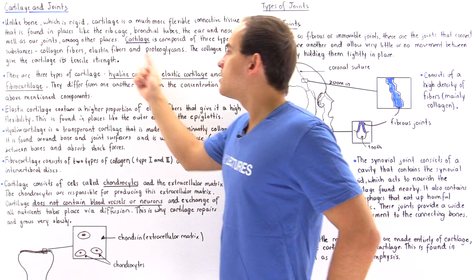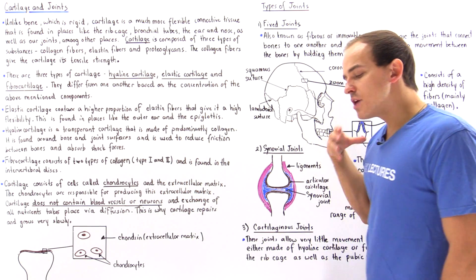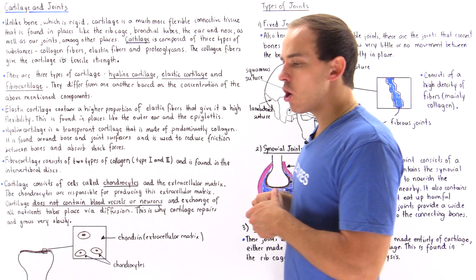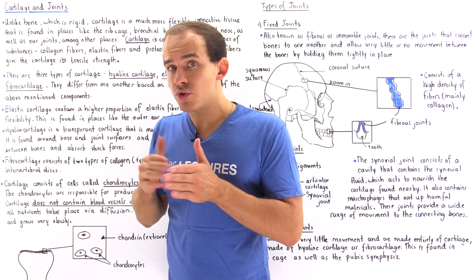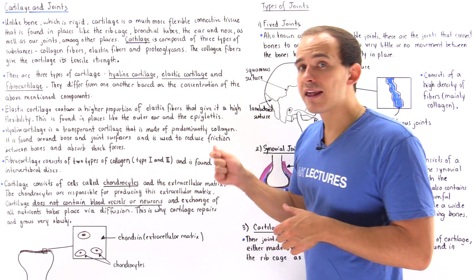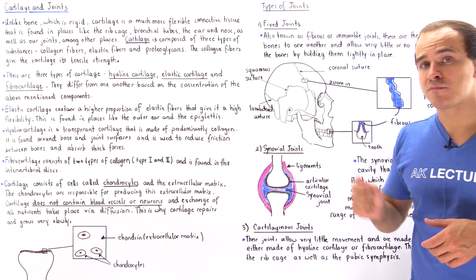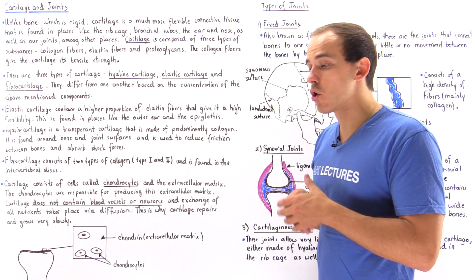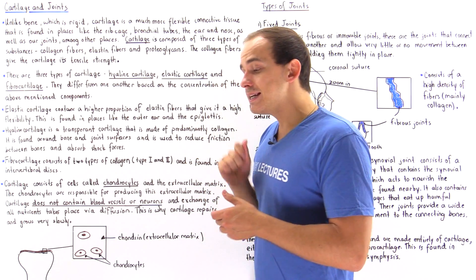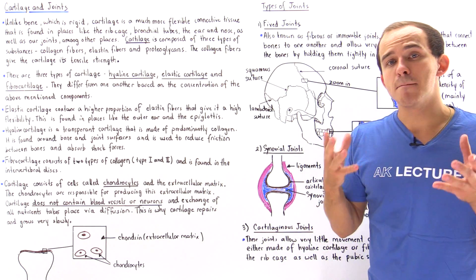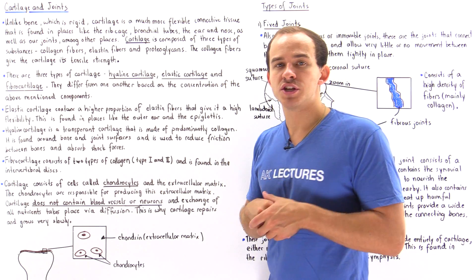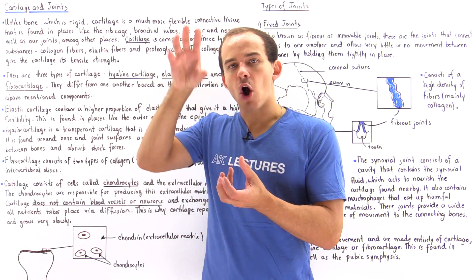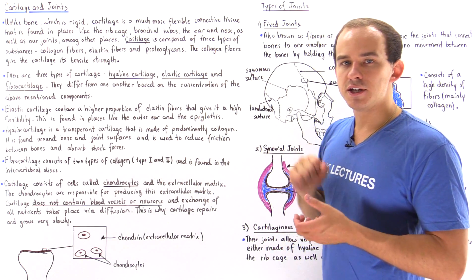The hyaline cartilage is a transparent type of cartilage — we can see through it. This hyaline cartilage is made up predominantly of collagen fibers, making it a very strong type of cartilage. It is the most common type of cartilage in the body because it lines our bones where bones are connected to one another via joints.